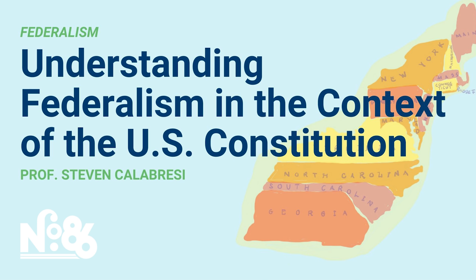Article 7 simply provides that the Constitution would go into effect once nine out of the 13 original states ratified it. The Constitution went into effect in 1789 with 11 states out of 13 having ratified it — North Carolina and Rhode Island did not ratify until after 1789. Article 7 is now complete because all of the original states ratified the Constitution. There are, of course, 27 amendments to the Constitution, the first 10 of which are called the Bill of Rights and were ratified in 1791. The amendments are critically important.